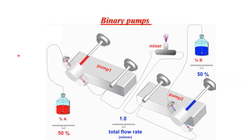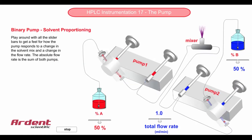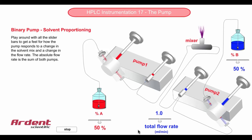This is a complete design of the binary pump, where we can notice a dual piston pump for solvent A and another dual piston pump for solvent B. The flow rate of each pump will control the ratio of the two solvents. To understand how the binary pump controls this ratio, let's look at some examples.